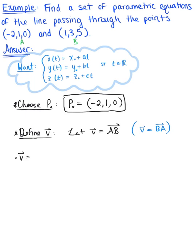Thinking terminal minus initial, we have the vector with components 1 minus negative 2, 3 minus 1, and 5 minus 0. So this leaves us with the vector 3, 2, 5.